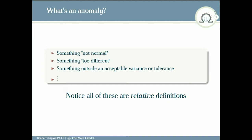If I just take a survey on social media, the Twitters, what's an anomaly? If I throw it out there, and I'll even see this in data science books and statistics books. It's not normal, something that's out of the ordinary, something that's too different. You might even get really technical with me: something that's outside an acceptable variance or tolerance. That's a technical version of the first two. But what's the problem with all of those? They're relative definitions, right?